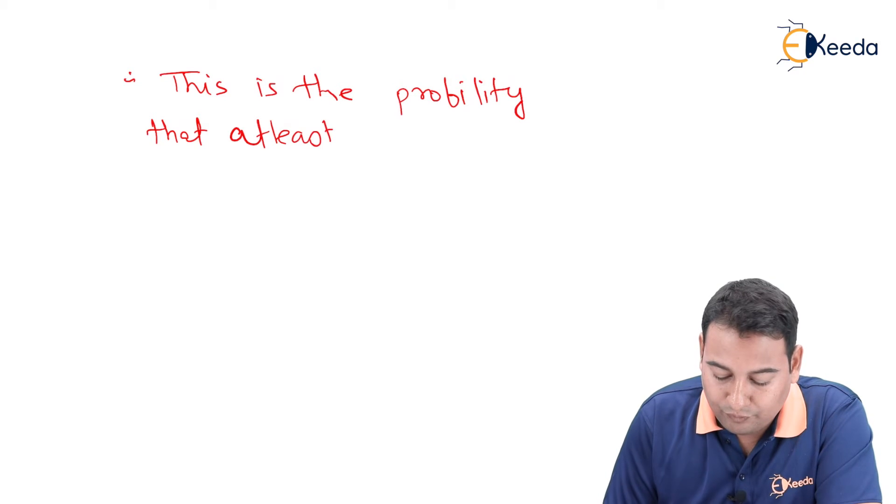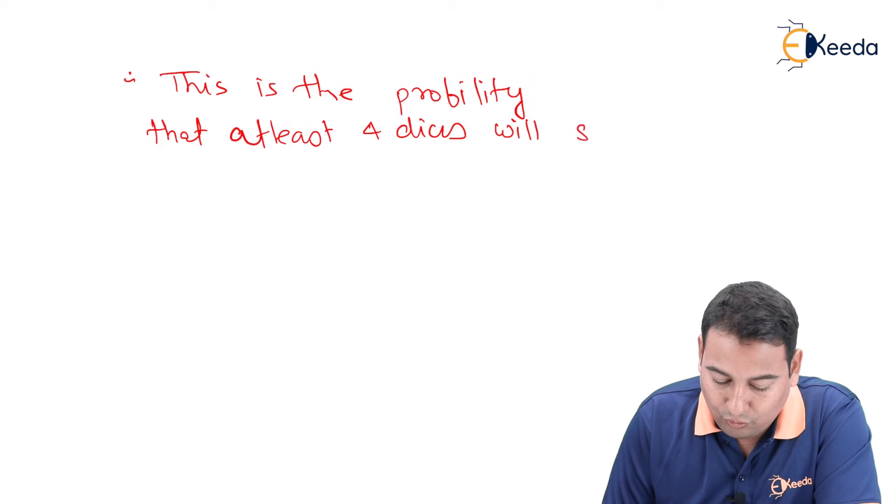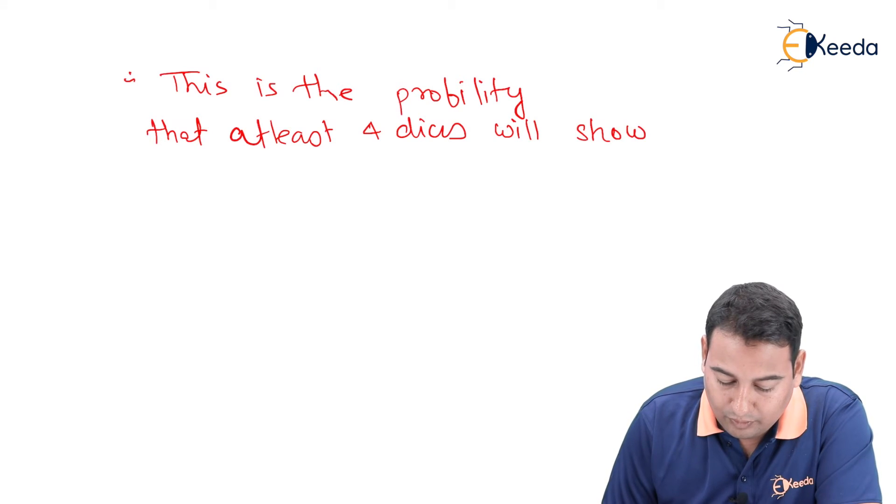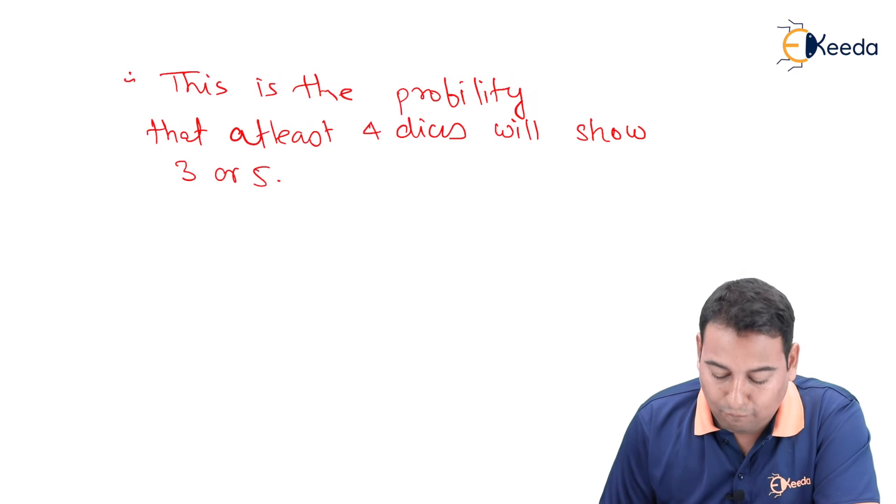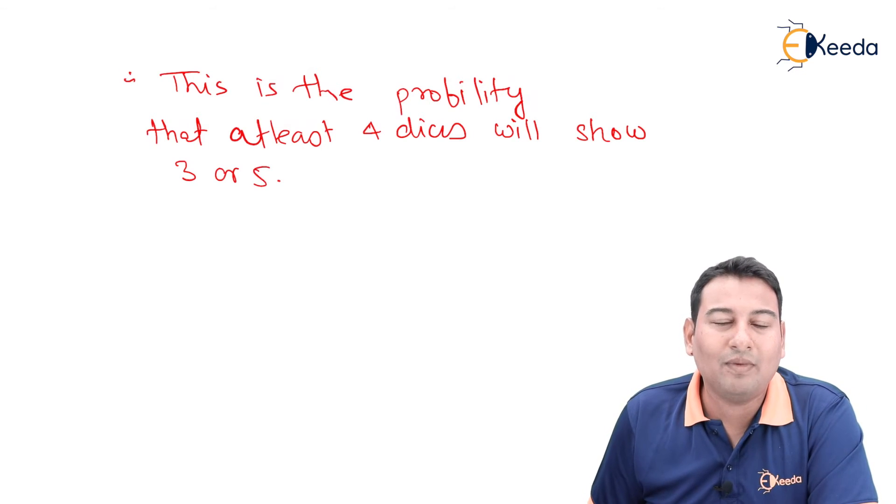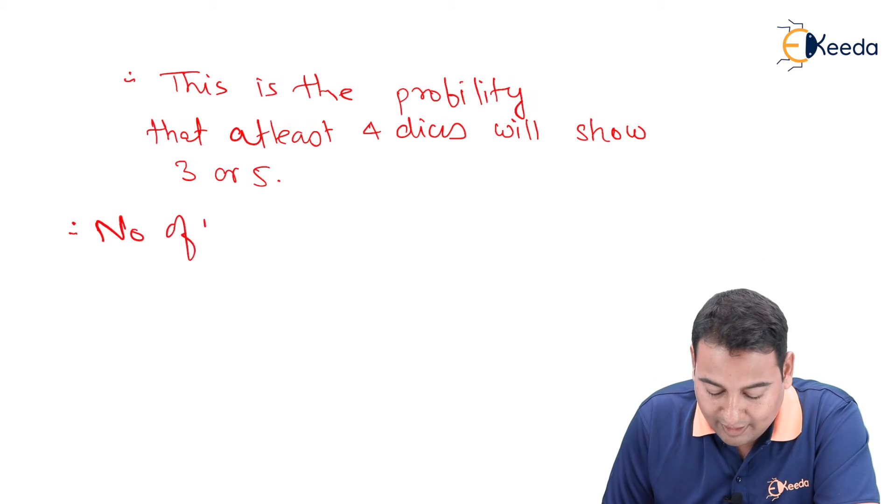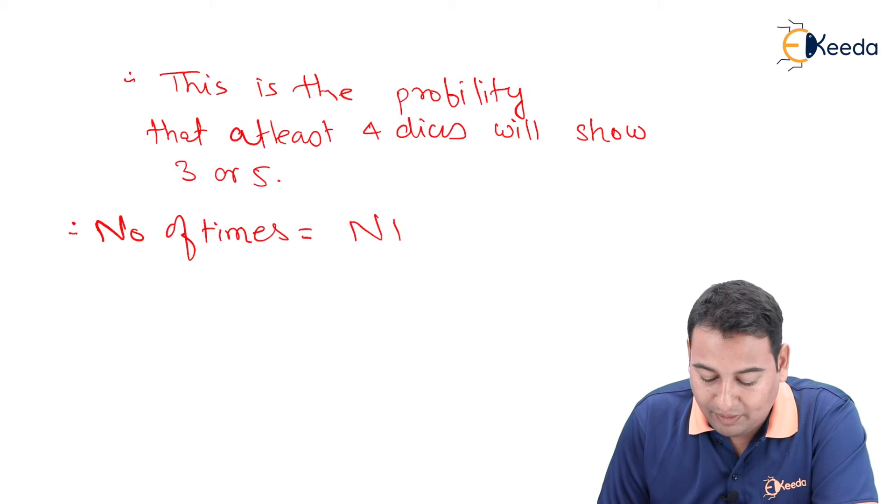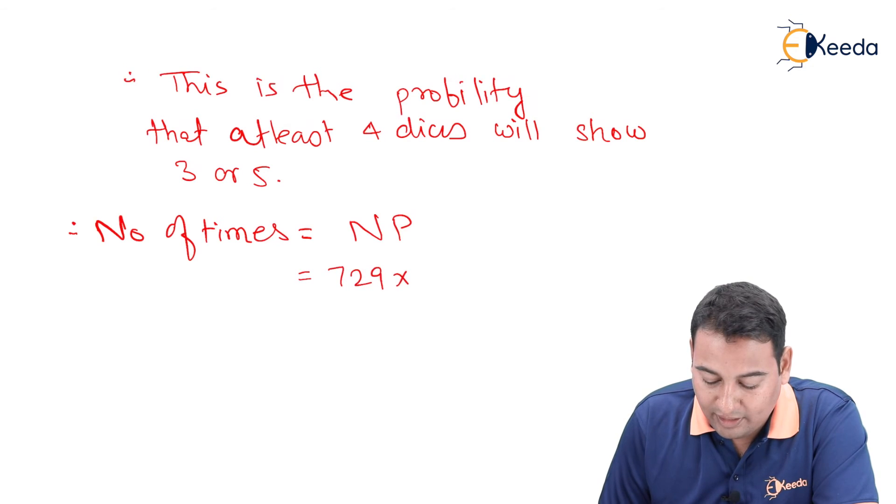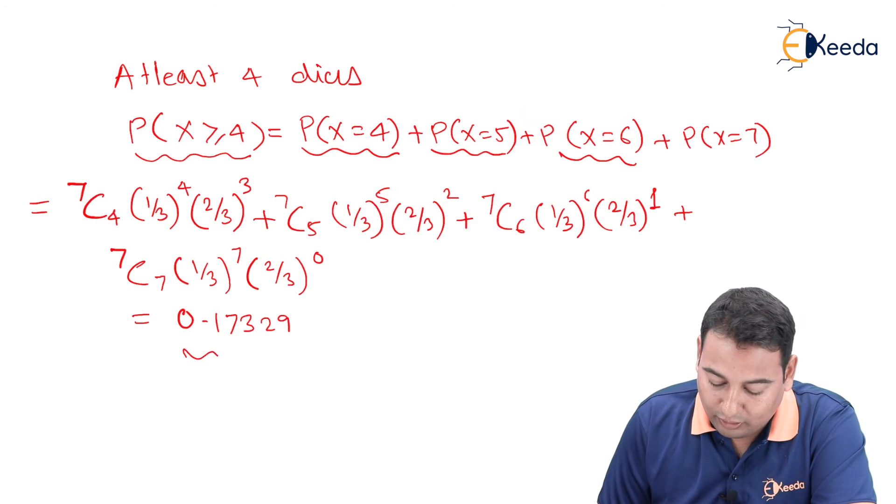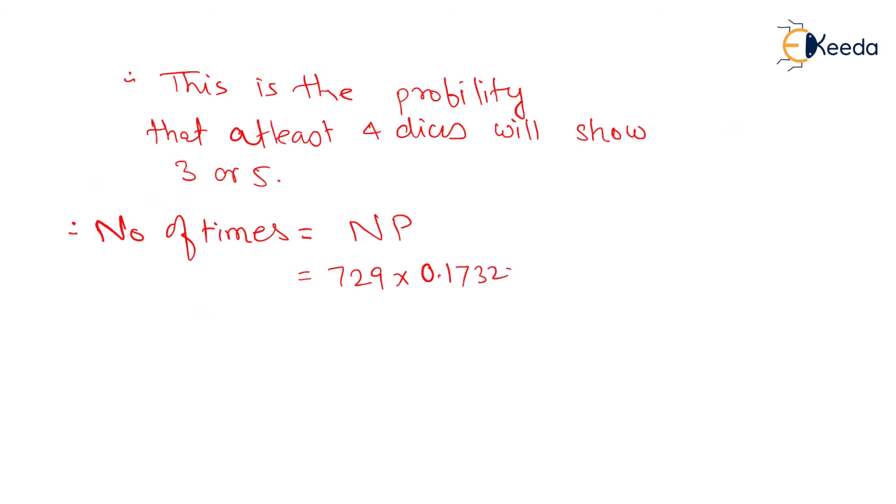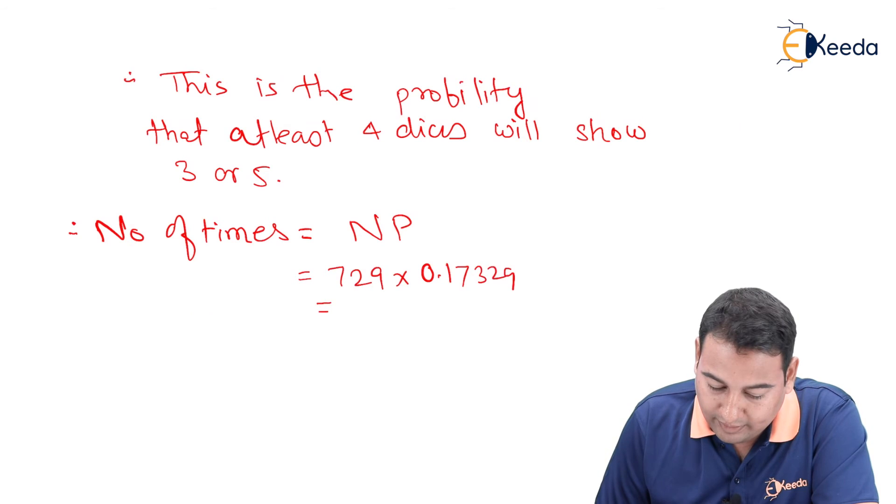at least four dices will show three or five. If you read the problem, it asks for the number of times, not probability. Therefore, for number of times, you need to multiply by capital N. So N*P = 729 into the probability that we got. If you multiply this, you will get the answer as